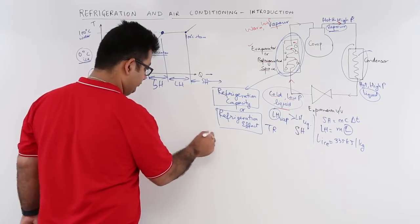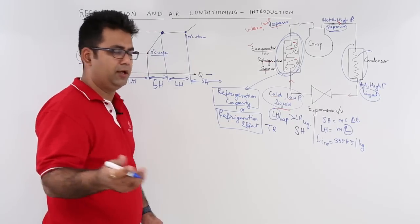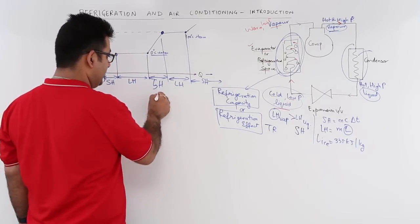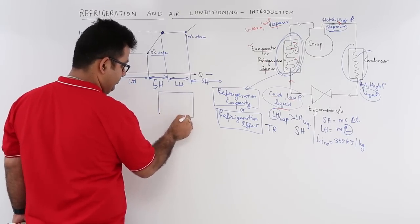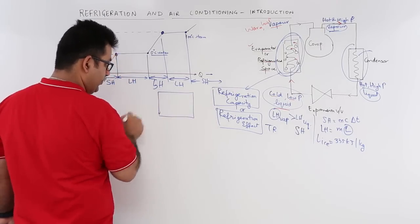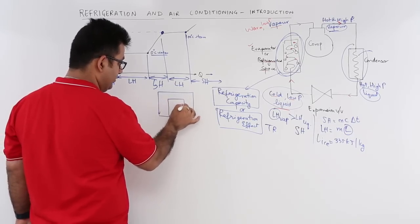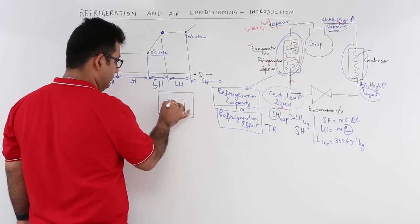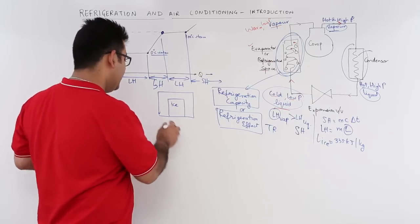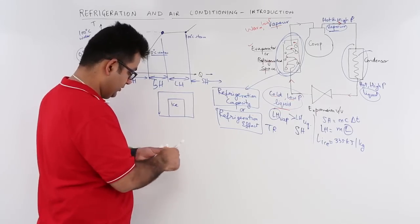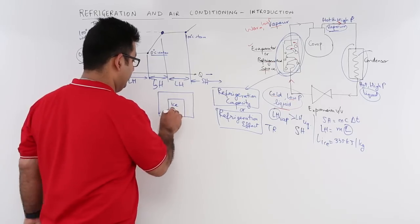How do you define 1 TR? Let's say you have a room, and inside the room you have some ice. The mass of this ice is 1 ton, and this ice is at 0 degree Celsius.